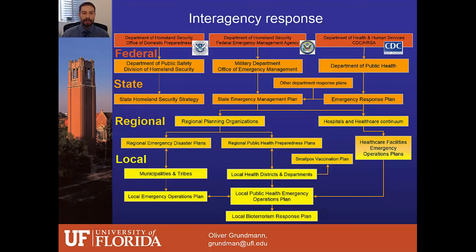The Department of Public Safety and Public Health often have specific divisions with state homeland security strategies and state emergency management plans in place. This is further communicated down to the regional level, where planning organizations require regional emergency disaster plans and regional public health preparedness plans. We now have a hospital preparedness plan in place for most communities within the United States. As soon as a biological agent dissemination is detected, a response should be communicated both downstream to the local level and upstream to the state and federal level to initiate a response as fast as possible.